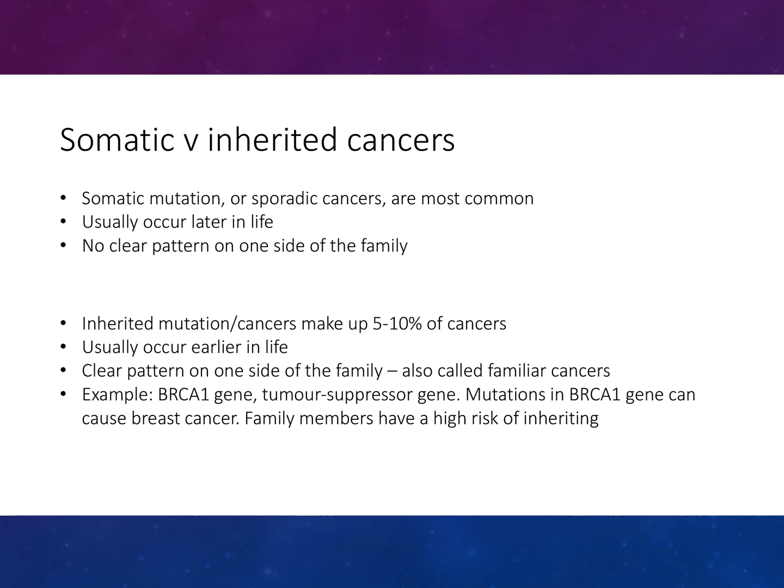Somatic or sporadic cancers are the most common, usually occurring later in life with no clear pattern on one side of the family. Inherited mutation cancers make up 5–10%, usually occurring earlier in life with a clear family pattern. For example, mutations in the BRCA1 tumour suppressor gene can cause breast cancer, and family members have a high risk of inheriting this.